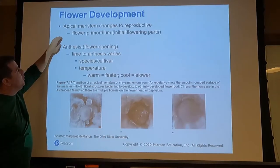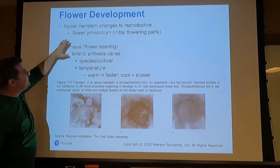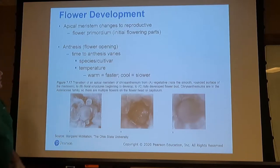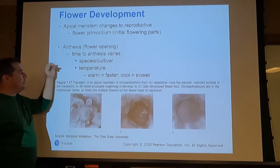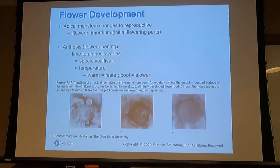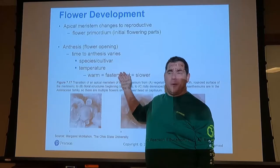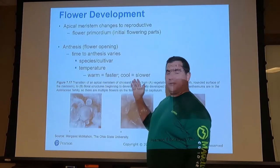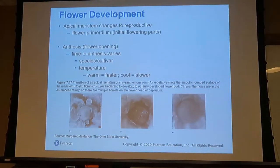The flower primordium is the initial flower parts, and anthesis is when the flower actually opens. Anthesis is species- or cultivar-dependent and also based on temperature — whether that's a warm-season or cool-season plant. If it's too cold, the flowers won't bloom, so there has to be a consistent balance.